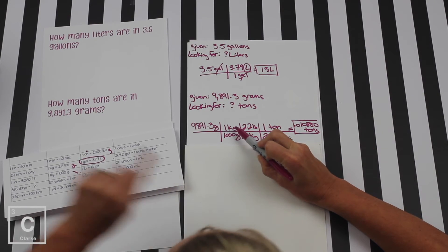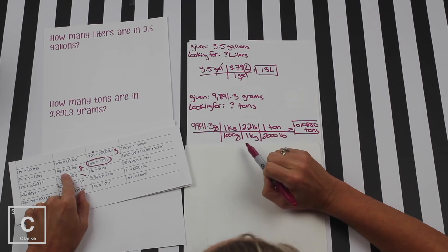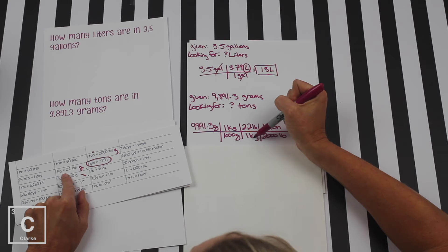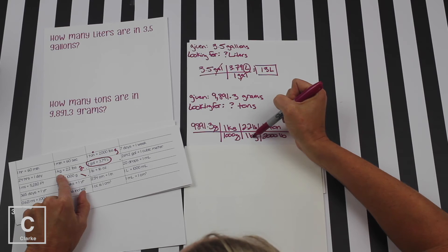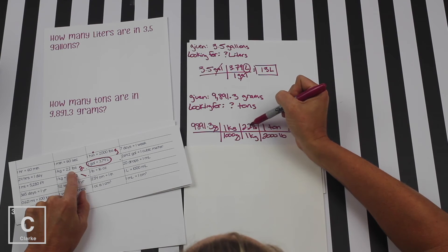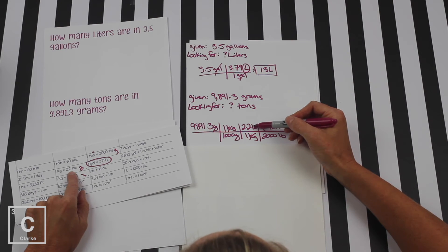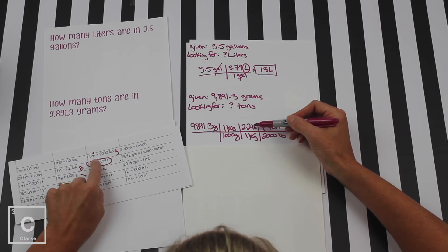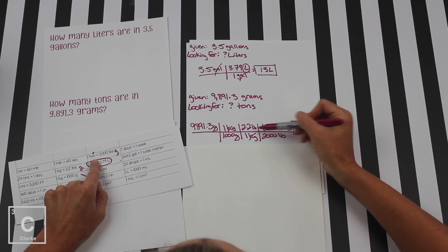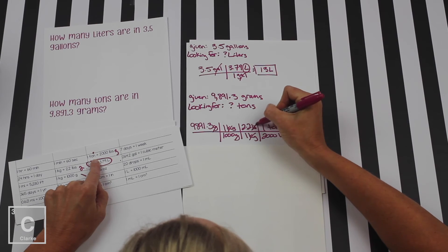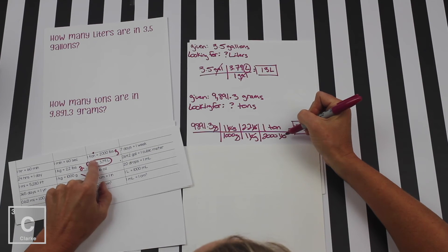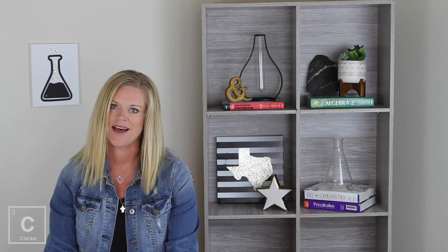Right now we have kilograms on top — we're not done. So we use our second conversion factor: bring kilograms to bottom. Kilogram has a one, so I put one by my kilograms, and it equals 2.2 pounds, which goes on top. Kilograms cancel. Pounds is not what I'm looking for, so I need another conversion factor. Let's get that last one in: pounds on bottom so they cancel. 2,000 was with pounds, and one ton goes on top. Ton on top — finally, that's what we're looking for. That is our key to stop.